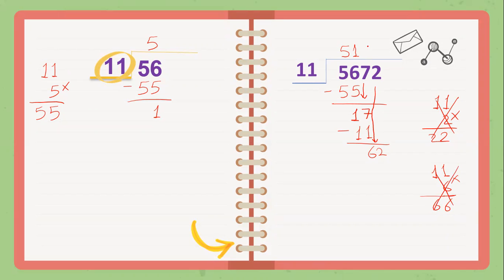So I'll put 5 in the quotient. 5 times 11 is 55. Again, subtract. 2 is smaller than 5, so we have to borrow. Now 12 minus 5 is 7. 5 minus 5 is 0, so the remainder is 7. No digit to bring down, so the division has ended.